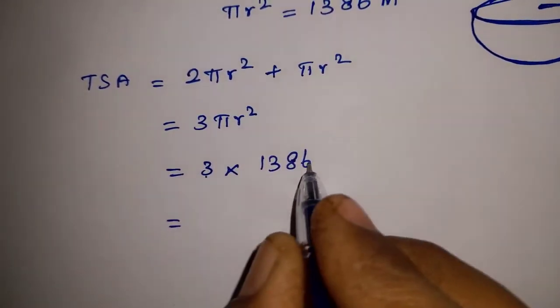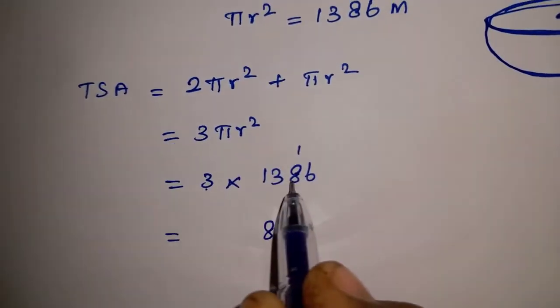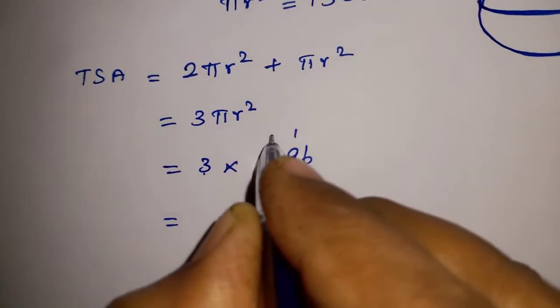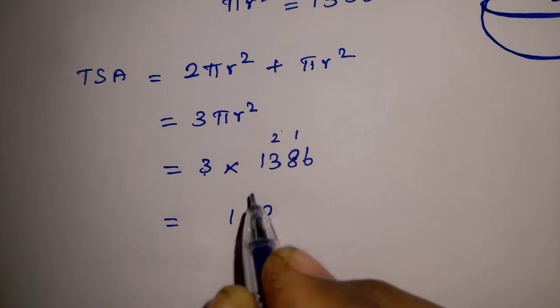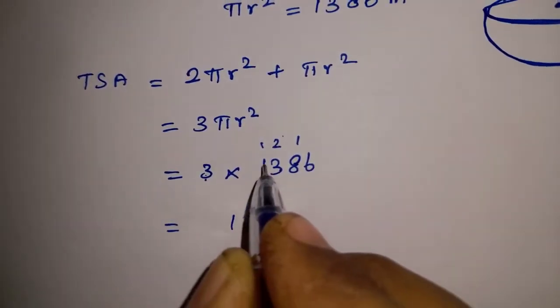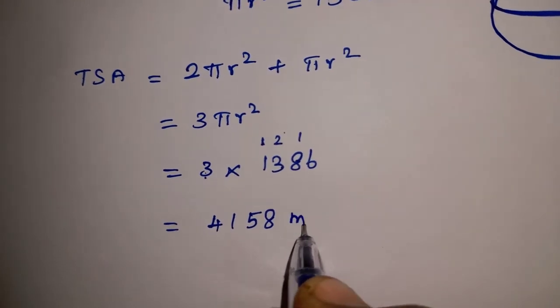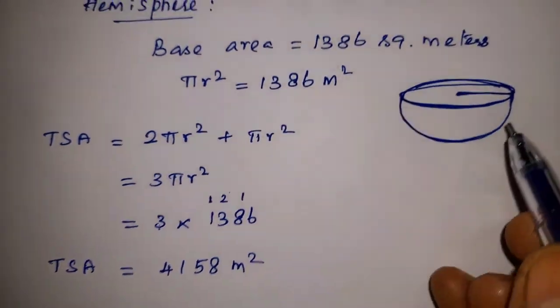Let's substitute: 3 times 1386. 3 times 6 are 18, remainder 1. 3 times 8 are 24 plus 1, add 25, remainder 2. 3 times 3 are 9, 9 plus 2 equals 11, remainder 1. 1 times 3 is 3 plus 1, add 4. So, 4158 meter square is the total surface area of hemisphere.